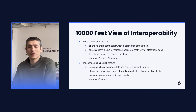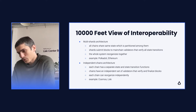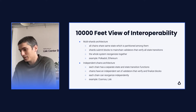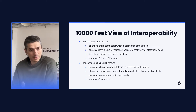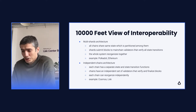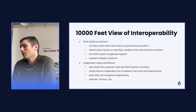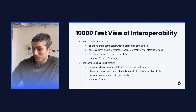In contrast, I want to compare this multishards architecture to an independent chains architecture. In this type of solution, each chain has a separate state and a separate state transition function. In particular, they also have an independent set of validators that are able to verify and finalize blocks independently from each other. Here, each chain can reorganize independently. Notable examples for this type of solution are Cosmos and Lisk, about which I would like to talk about today.